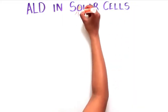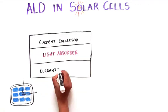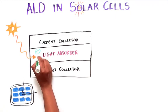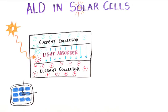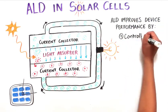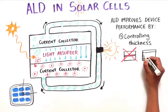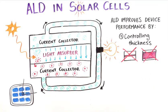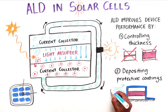Let's take a look at how the Bend Group applies ALD to energy conversion challenges, starting with solar cells. One simple solar cell design consists of a light absorber and two current collectors. Sunlight is captured by the light absorber, exciting a negatively charged electron and a positively charged hole. These charges are separated by an electric field within the cell to opposite current collectors and pass through an external circuit providing electrical power. ALD can improve solar cell performance by precisely controlling the thickness of each component — the light absorber must be thick enough to absorb sunlight, but not so thick that the electrons and holes cannot reach the current collectors. Additionally, ALD can be used to deposit protective coatings which shield sensitive solar cell components from air and water degradation.